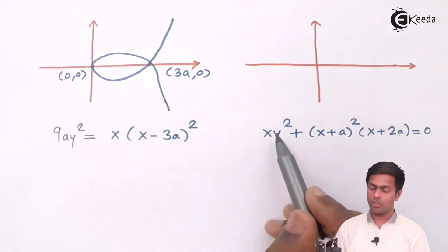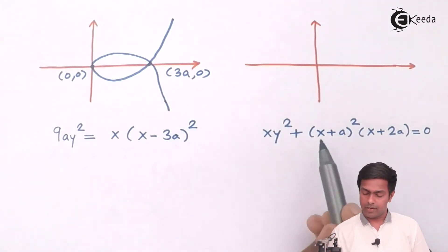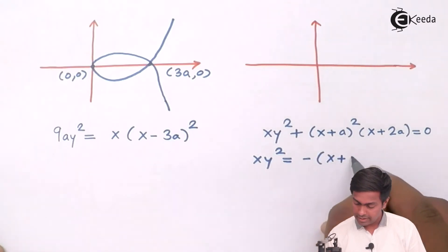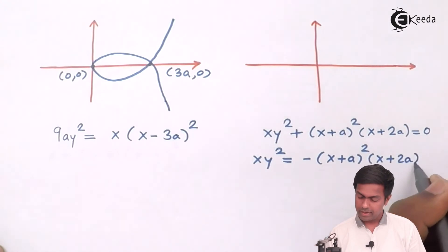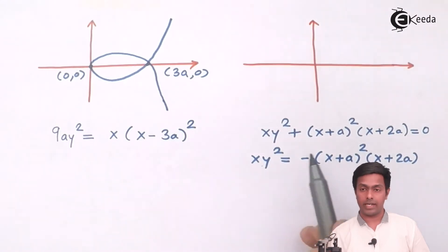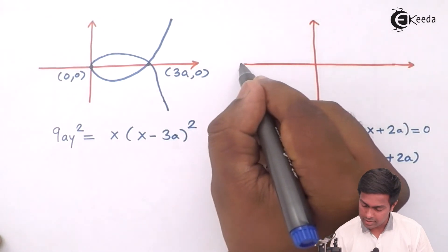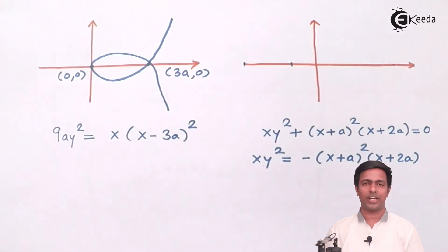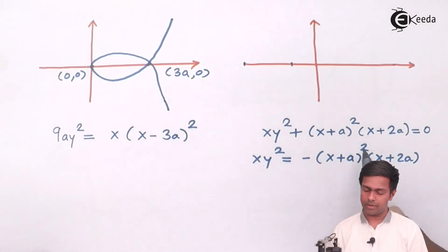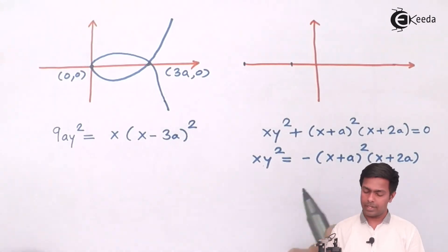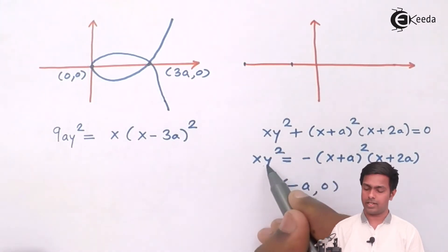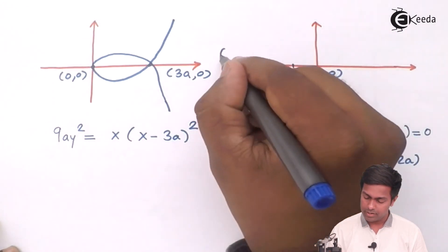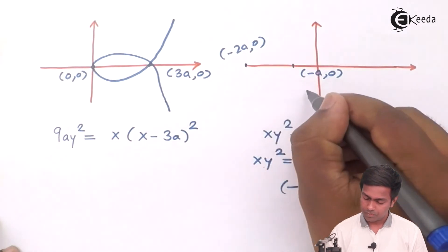For the final example, rewriting gives xy² = −(x + a)²(x + 2a). Putting y = 0 gives x = −a or x = −2a. So those two points are at −a and −2a on the x-axis. For the knot, the square term is (x + a)², so with x we have +a, meaning the knot is at (−a, 0). The loop passes through (−a, 0) and (−2a, 0), with the knot at (−a, 0).